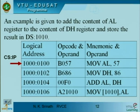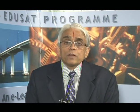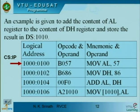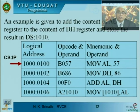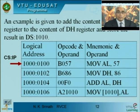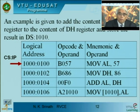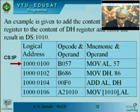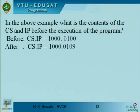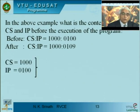The CS:IP will point to one particular code, increments by 2 to get the next code, increments again by 2 for the next, and so on. This is a simple program for performing an add operation. Before execution, CS = 1000h and IP = 0100h. At the end of execution, the last instruction at 1000:0106 has a 3-byte opcode/operand field, so IP becomes 1000:0109.